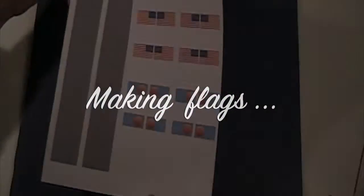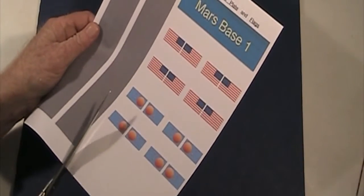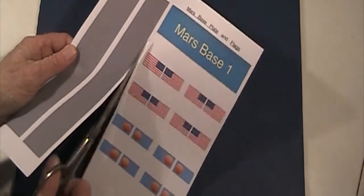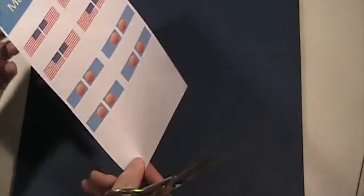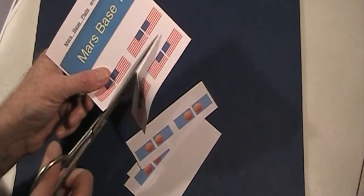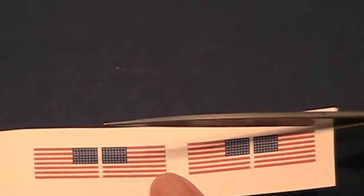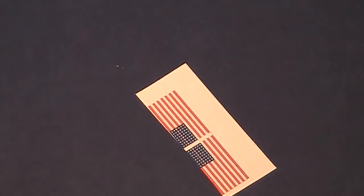Now, for making the flags. This is kind of fun, but you have to be careful. Take the page with the flags and cut off the road sections. Now, I'd like you to cut out the strips of flags. There are Mars flags and United States flags on here.